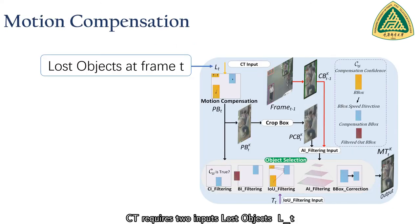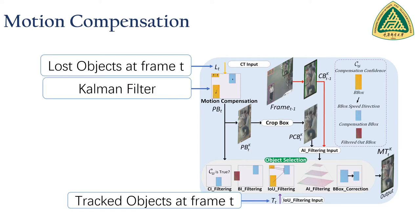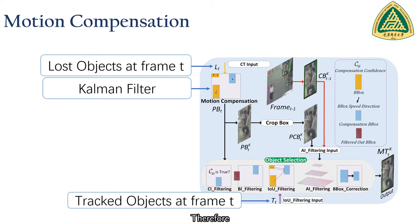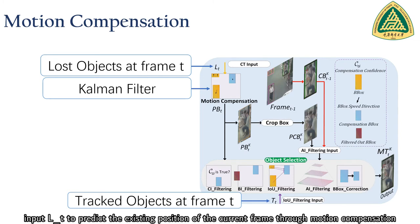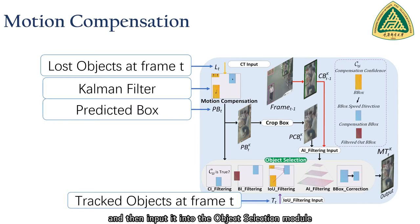CT acquires two inputs: lost objects LT and tracked objects TT respectively. In the motion compensation module, we use the Kalman filter with uniform motion and linear observation by default. Therefore, we input LT to predict the existing position of the current frame through motion compensation, getting predicted box PBT, which is then input into the object selection module.